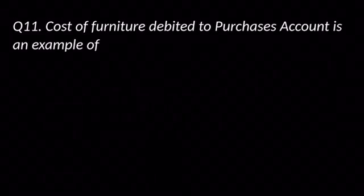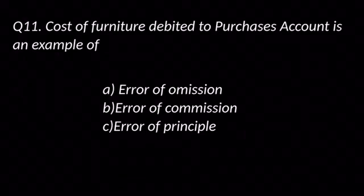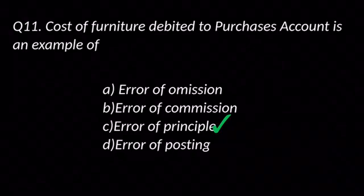Question number eleven: Cost of furniture debited to purchase account is an example of — options are: A. Error of omission, B. Error of commission, C. Error of principle, and D. Error of posting. The answer is C: Error of principle.